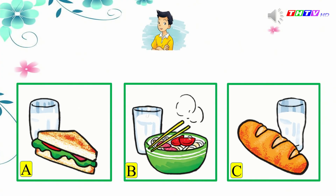Các em đã thực hành với cô rất tốt. Về nhà, các em hãy thực hành lại mẫu câu này cùng với bạn của mình nhé. Look at the picture. Today is Linda's birthday. She invites some friends — Nam, Mai, and Tony — to her party. Let's listen: what would they like to eat and drink? Look, this is Nam. What would he like to eat and drink? What would you like to eat? I'd like a bowl of noodles, please. What would you like to drink? A glass of milk, please.